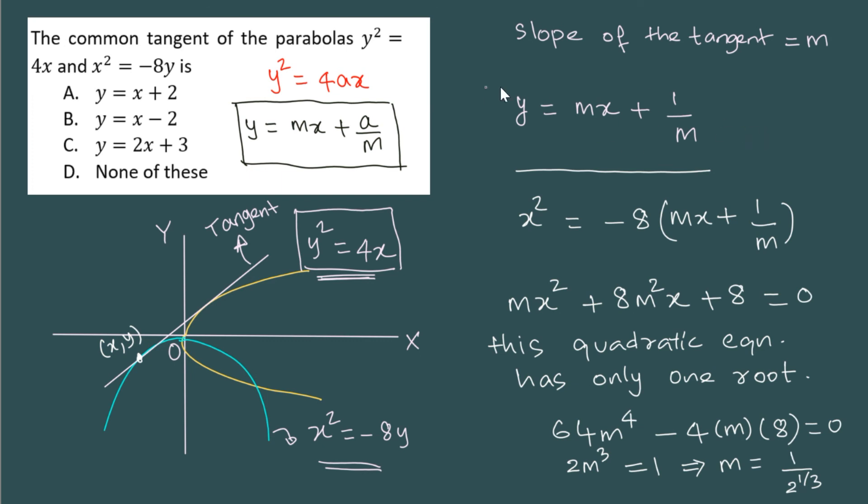So y is, I can write this as x by 2 to the power one third and then 1 by m, I can write it as 2 to the power of one third. So that is the equation of the tangent. And the answer is none of these.